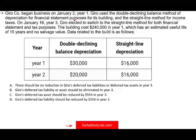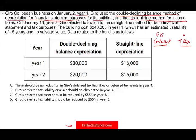Gyro company began business on January 1st, year one. They used the double declining balance method for depreciation for financial statement purposes for its building, and the straight line method for income tax. So for financial statements they use GAAP — double declining balance — and for the IRS they use the tax method — straight line. Simply put, this is GAAP and this is tax.